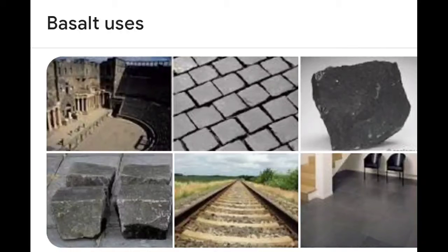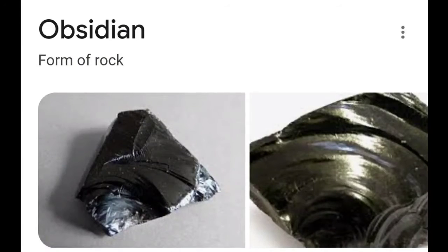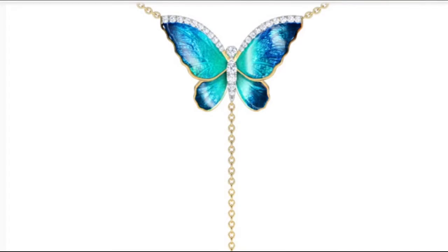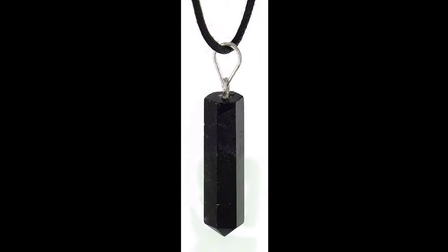Obsidian is a rock formed when magma cools quickly. It is formed from elements like silicon, oxygen, aluminium, etc. It has a crystal-like appearance, so it is used to make jewellery. During the early stone age, it was used as a tool to hunt animals.